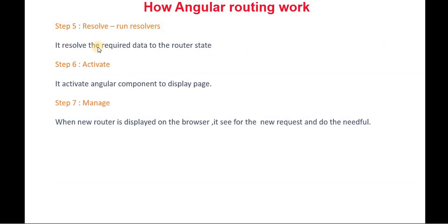Another step is resolve — run resolver. It resolves the required data to the router state. Next is activate, which checks whether the user is activated to see the particular page, and then manages when a new route is displayed on the browser. This is especially needed when we check for lazy loading, as it identifies which page needs to be loaded next. This is the overall process of routing — whether you click a button or type a URL directly to navigate to a particular page.